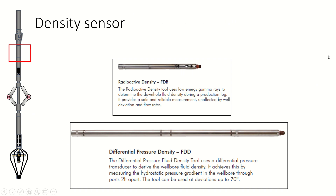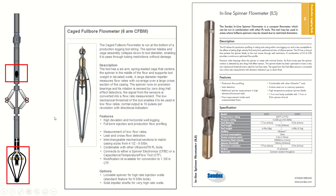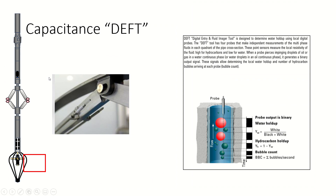Here is the sensor, and here is the spinner. We have two spinners: an inline spinner and a full-bore spinner. The important one is the full-bore spinner, because the full flow of fluid will encounter this spinner. The other sensor is capacitance, sometimes called dielectric. Capacitance is also named dielectric, and it gives opposite readings to the density sensor.